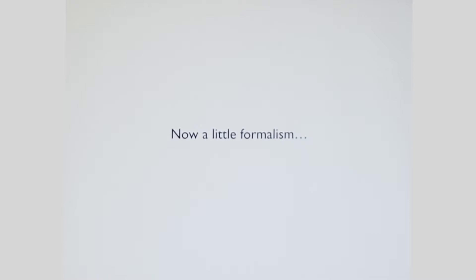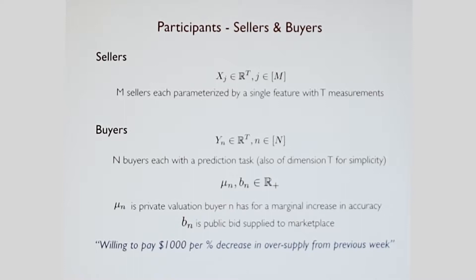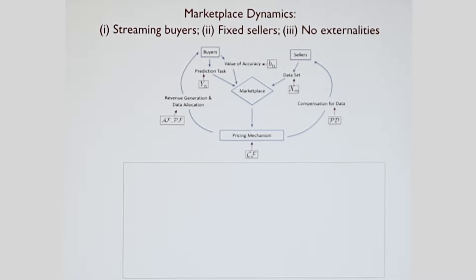Now we're going to have a little bit of formalism and we're going to try to keep it as math-lite as possible. First, the participants are the sellers and the buyers. We're going to say there are M sellers, each of them parameterized by T measurements. Then we're going to have the buyers. There are N buyers with a prediction task that's denoted YN. We're just going to say it's dimension T for simplicity. Along with the prediction task, they also have MuN, which is their private valuation for how much they value a marginal increase in accuracy. This is something like I'm going to pay $1,000 for a percent decrease in oversupply from the previous week. BN is the analog of MuN, which is the public bid spread to the marketplace.